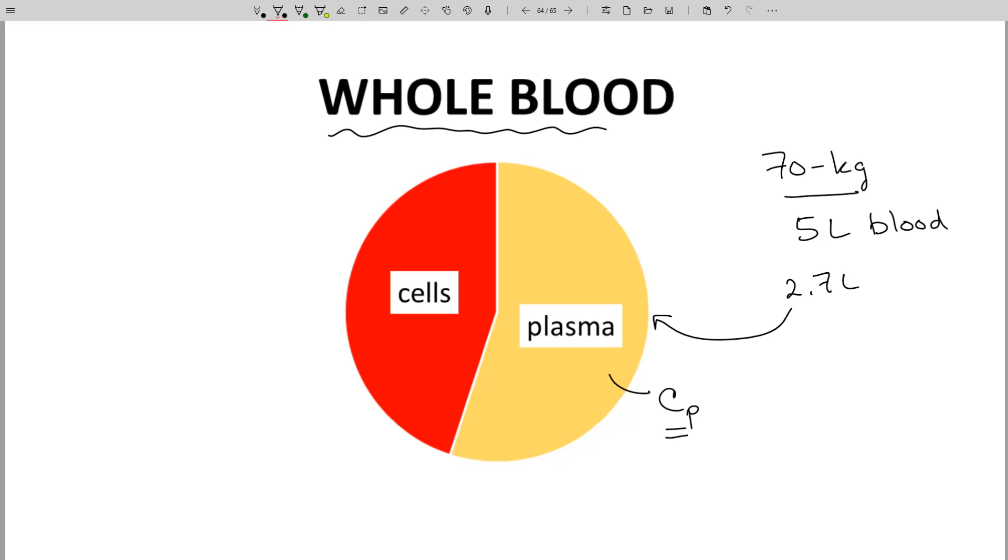It is possible to measure drug concentrations in whole blood, often noted as CB or CWB, but it's unusual. Whole blood is harder to analyze because all the cells need to be managed for the chemical analysis of the drug.